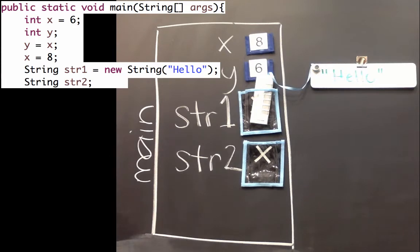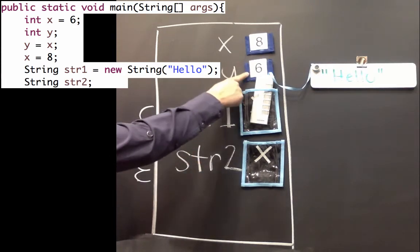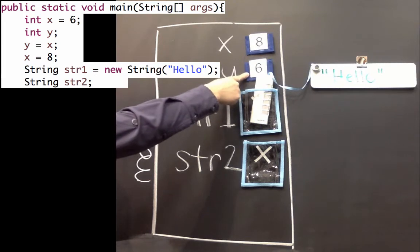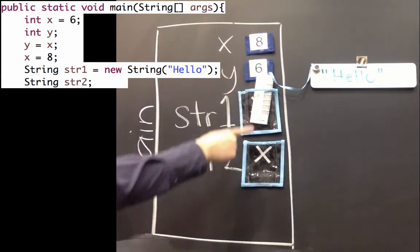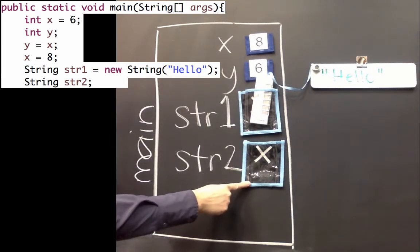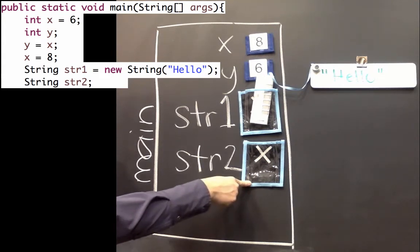So we saw here that when we didn't give y a value, it started at zero. That was its default value. And here when we didn't give string 2 a value, it started at null. That was its default.